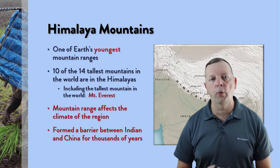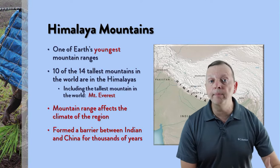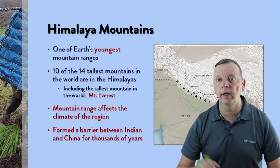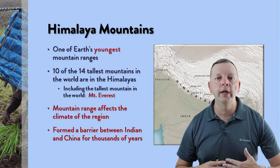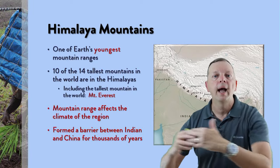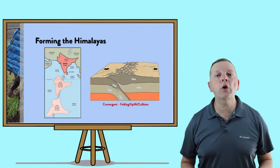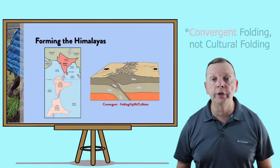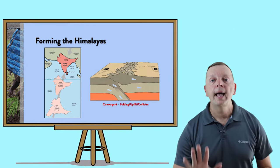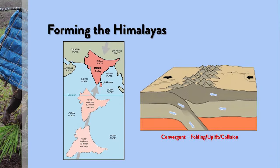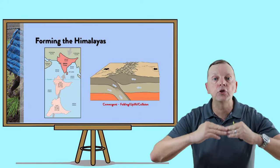The Himalayas do two very important things. First, they really impact the climate of not only South Asia but also East Asia — we'll talk about that when we discuss China next unit. Also, for thousands of years, the Himalayas were a barrier between the people in China and the people in India. The Himalayas are a product of crustal folding, caused by the Indian subcontinent crashing into the Asian continent starting about 50 million years ago and continuing today, as the Indian subcontinent continues moving northward.